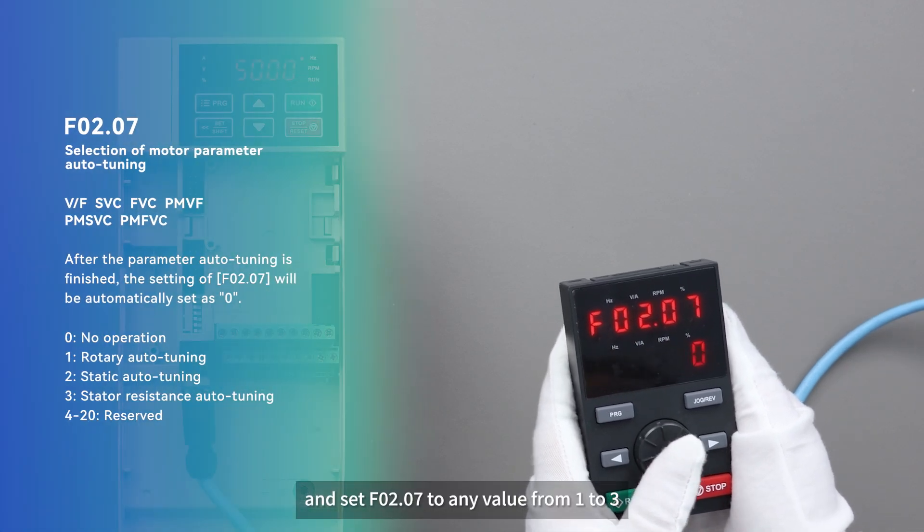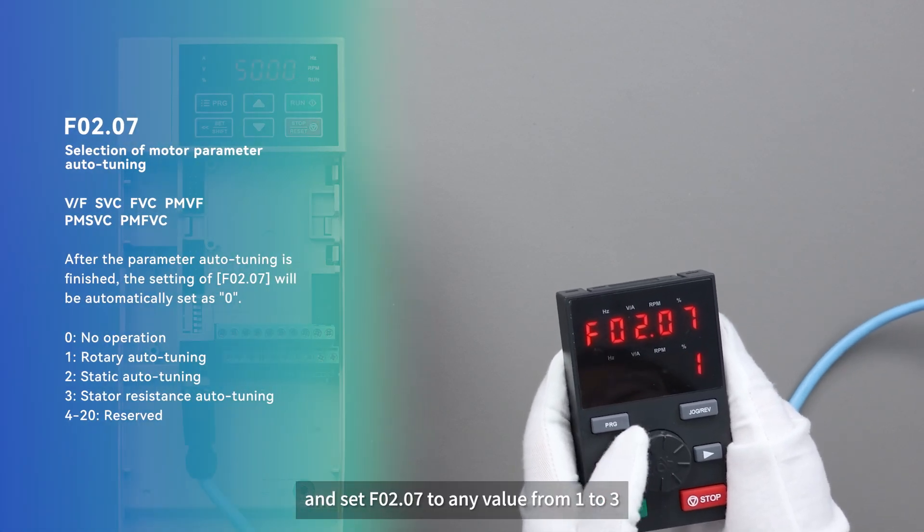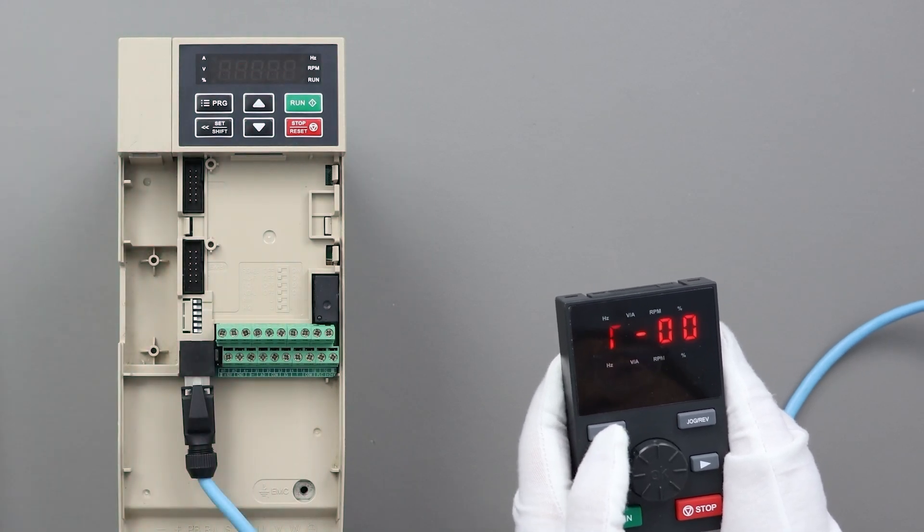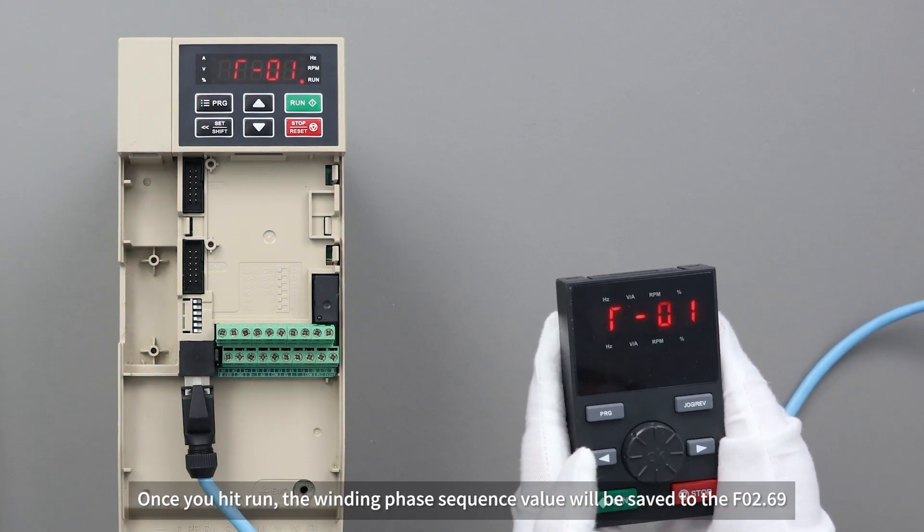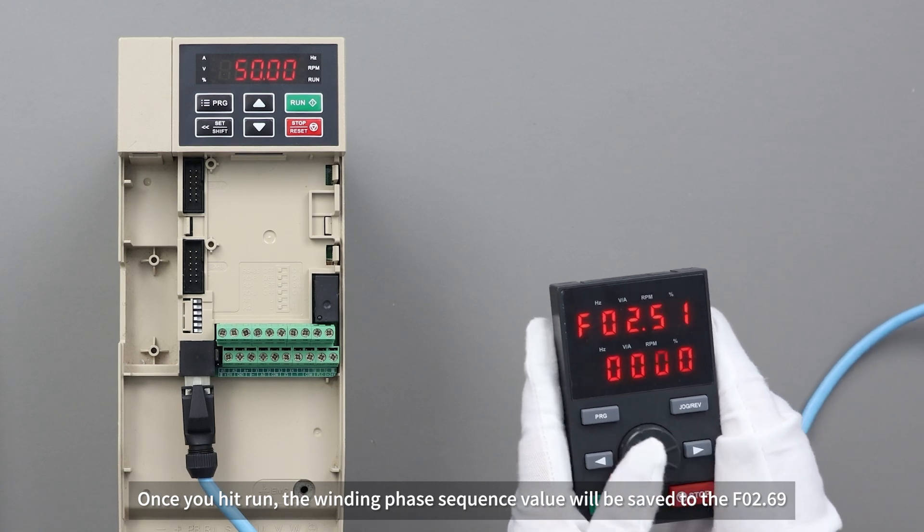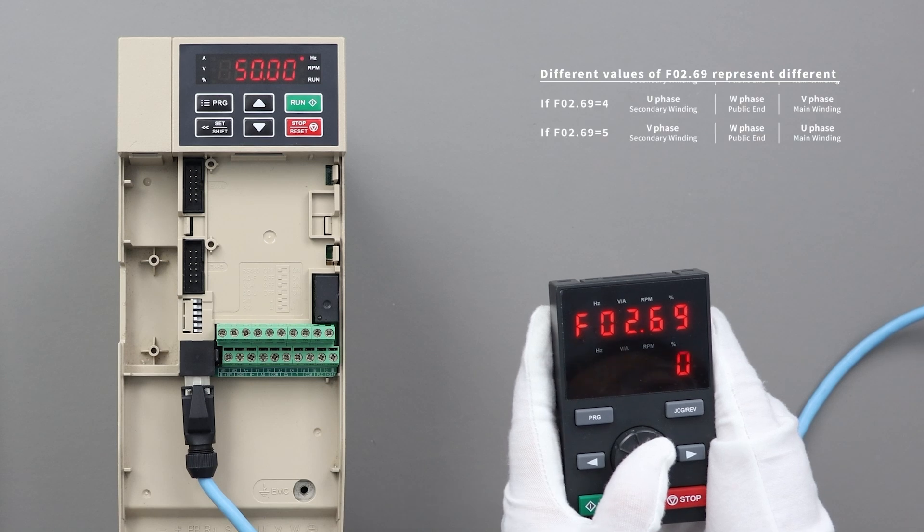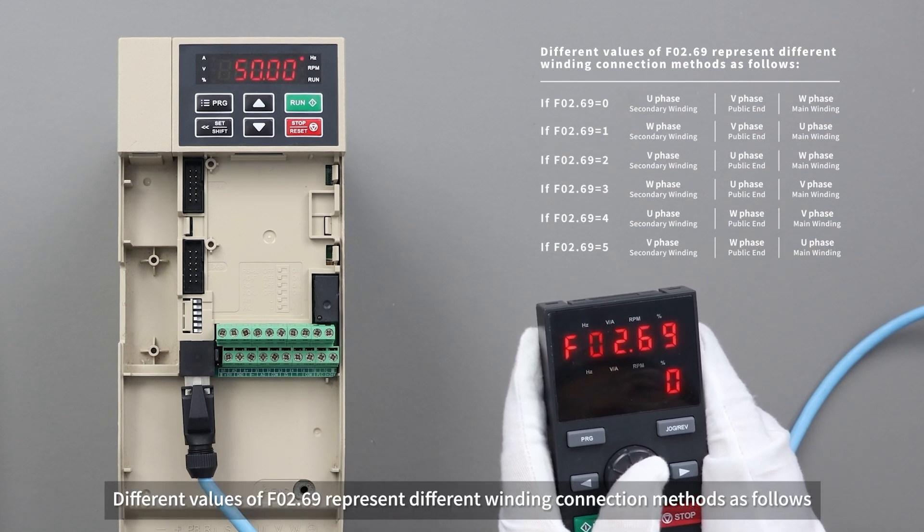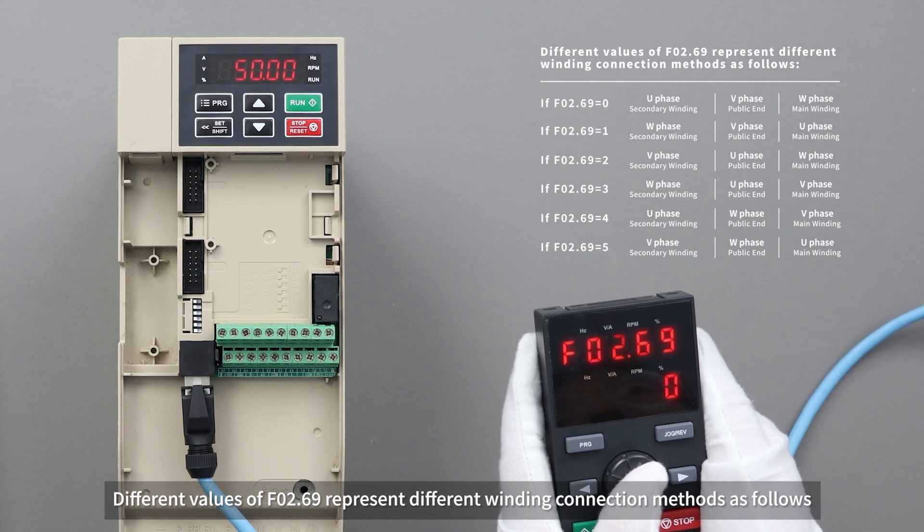And set F02.07 to any value from 1 to 3. Once you hit Run, the winding phase sequence value will be saved to F02.69, which defaults to 0. Different values of F02.69 represent different winding connection methods.